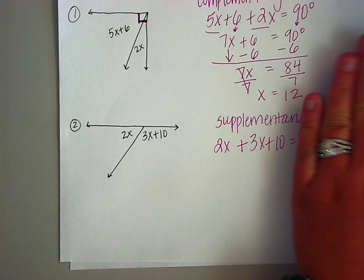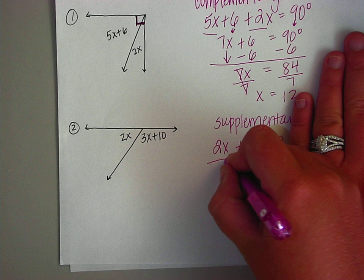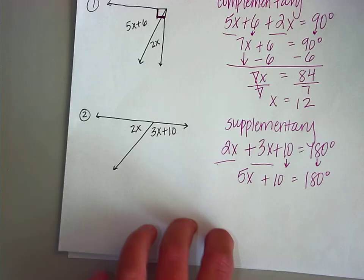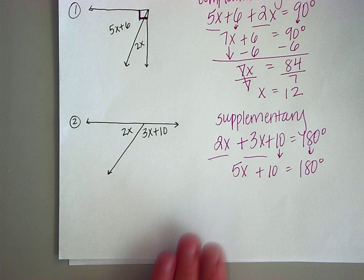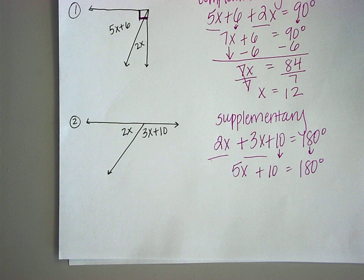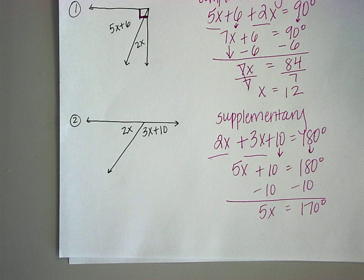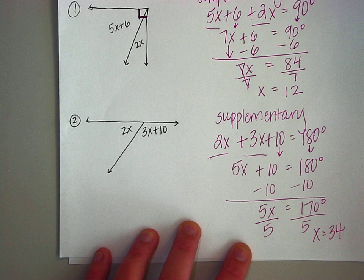The first step is to always add like terms. 2x plus 3x gives us 5x, and we bring everything else down, so 5x plus 10 equals 180. We have our x's on one side and need to move numbers to the other. We subtract 10 from both sides, then divide by 5, so x equals 34.